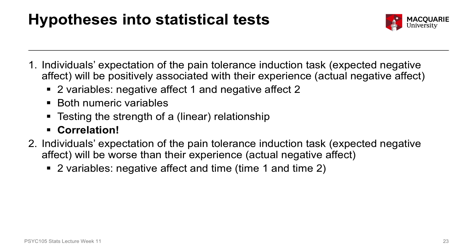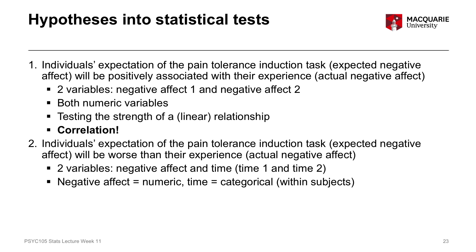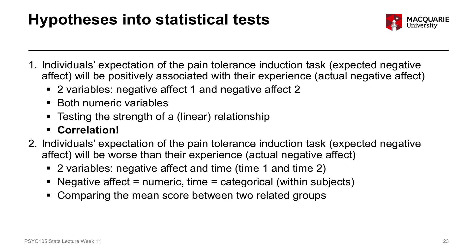We've got two variables: negative affect (numeric) and time (a within-subjects categorical variable). We have time one and time two, and all participants gave us scores for both, so we've got related groups. Because we want to compare the mean score between these two related groups, we'll use a paired t-test. Time is our independent variable and negative affect is our dependent variable, with the same individuals providing scores at both time points.